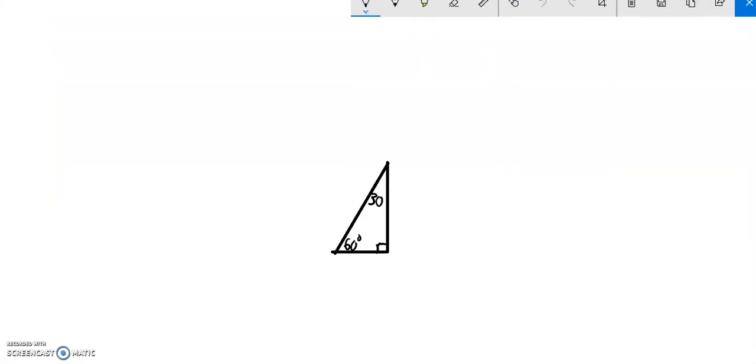So, one of the problems on the last assignment, we had a 30, 60, 90, and I'm just going to sketch it. We knew that this was 60, and we were told that the side opposite the 60 is 1/10. And then what we're supposed to do is find the A and B values if this is 1/10.